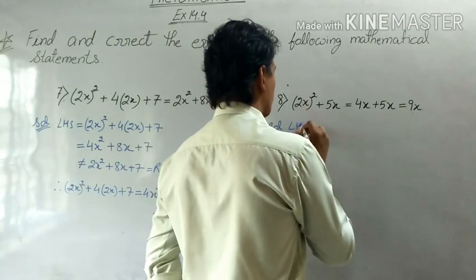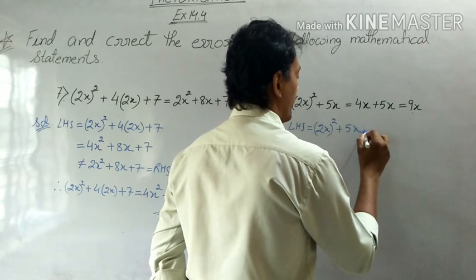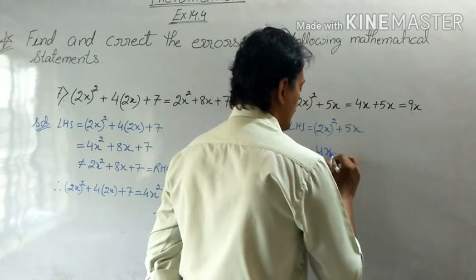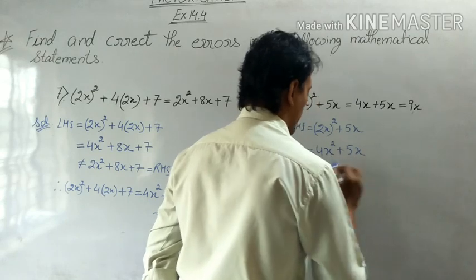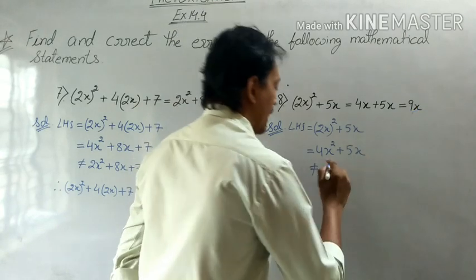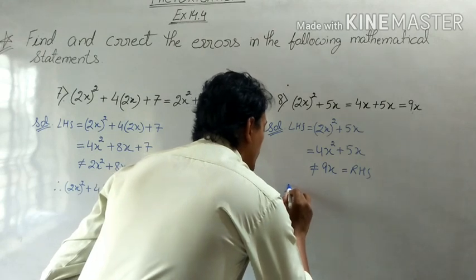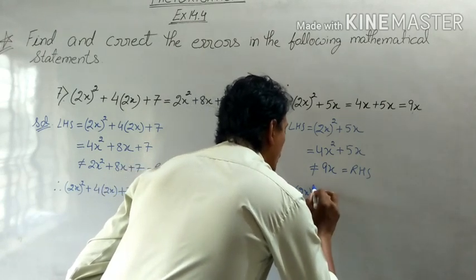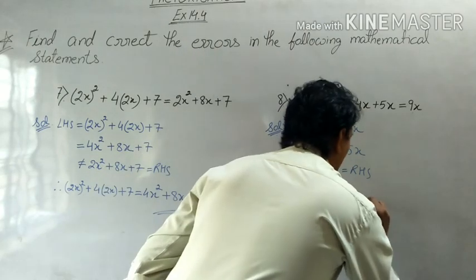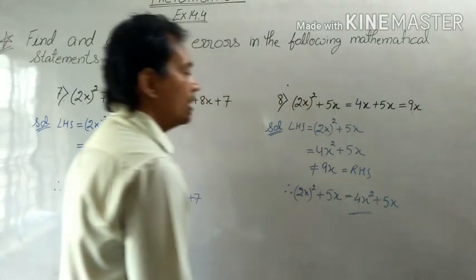The next part has LHS equal to (2x) squared plus 5x. Simplifying: 2 squared gives 4, so (2x) squared equals 4x squared, giving 4x squared plus 5x. This is not equal to the RHS which is 9x. The correct statement is: (2x)² + 5x = 4x² + 5x.